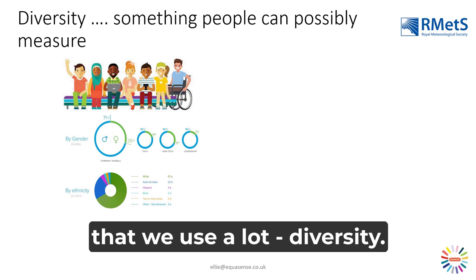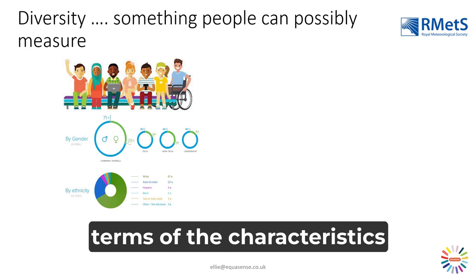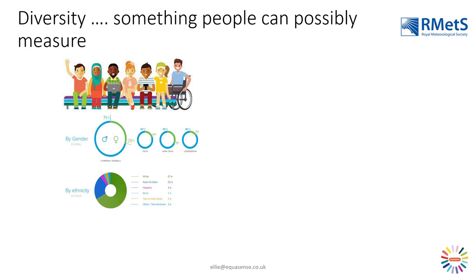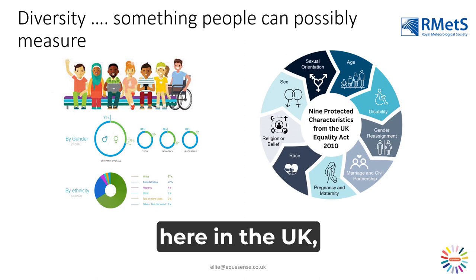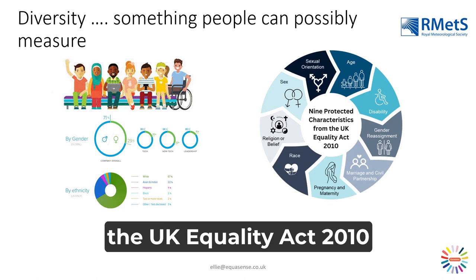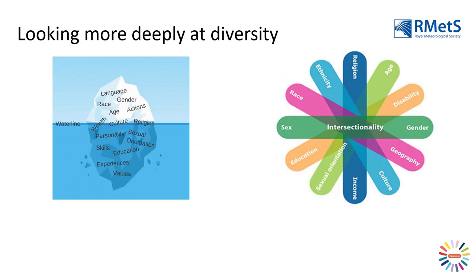Turning now to our fourth term: diversity. Many organisations talk about diversity because it's something we think we can measure, at least in some ways. It can be discussed in terms of the characteristics you see in this cartoon — people with different coloured skin, different genders, different physical abilities, different appearance. We often see reports of experiences by gender or by ethnicity. Here in the UK, we are often focused on the nine protected characteristics of the UK Equality Act 2010: age, disability, gender reassignment, marriage and civil partnership, pregnancy and maternity, race, religion or belief, and sex or sexual orientation.